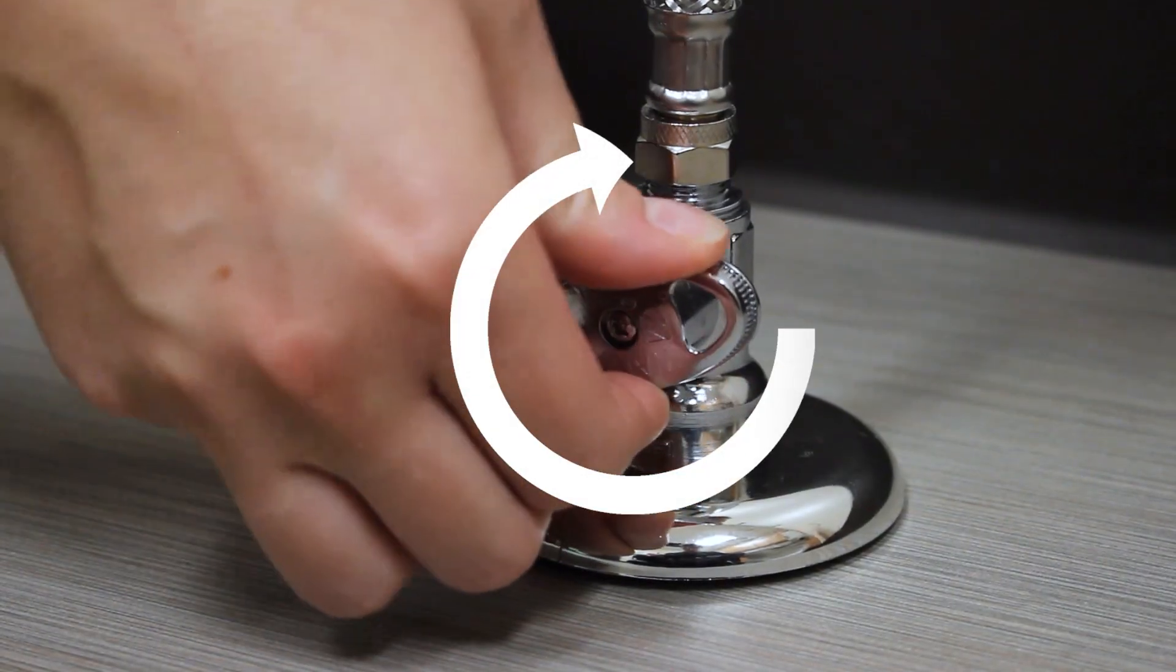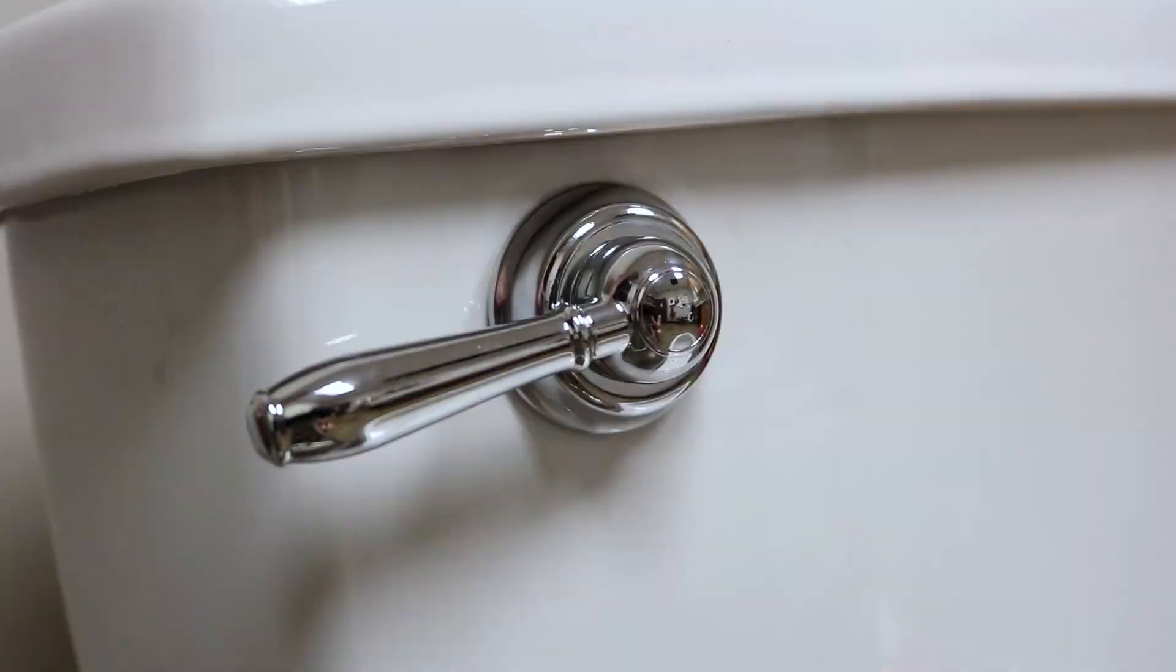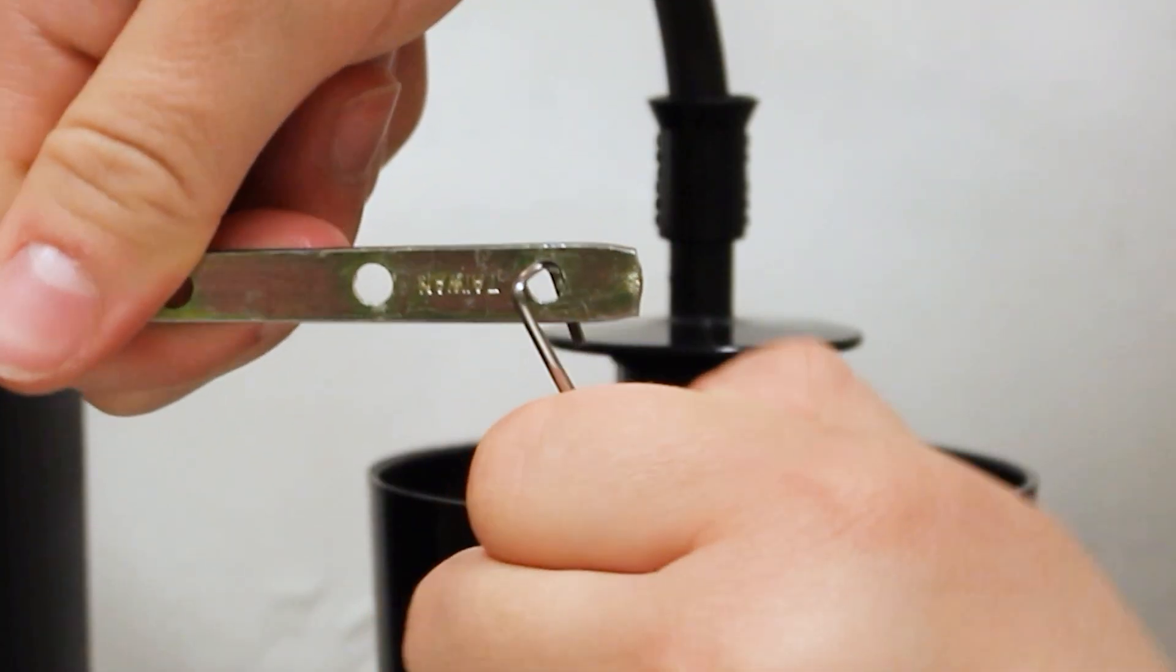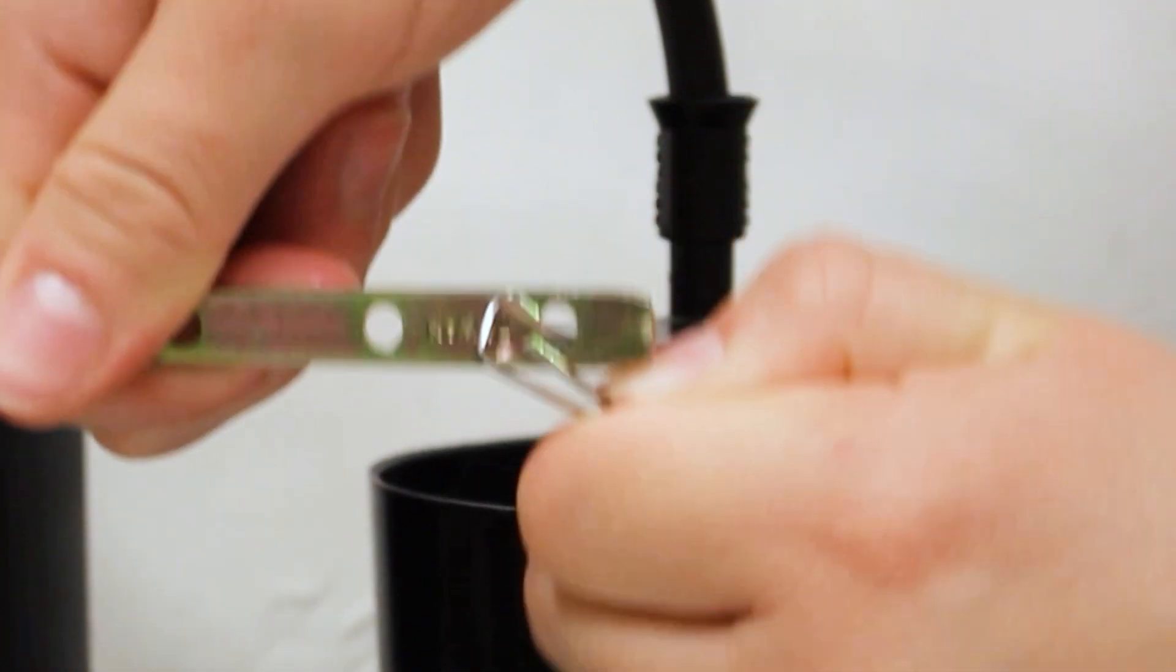Begin by turning off the toilet's water supply, then flush the toilet to drain the tank of water. Next, detach the flush lever chain from the flush lever arm.